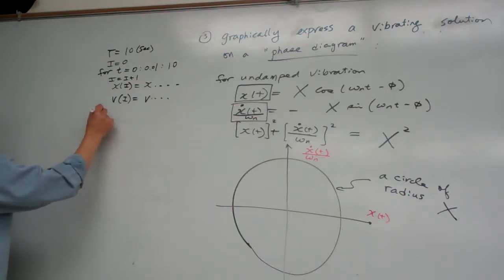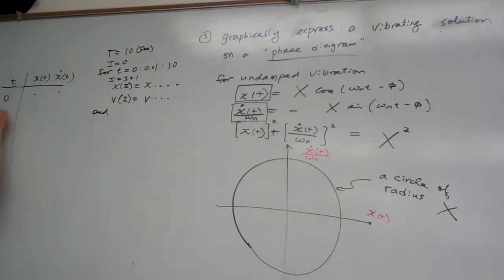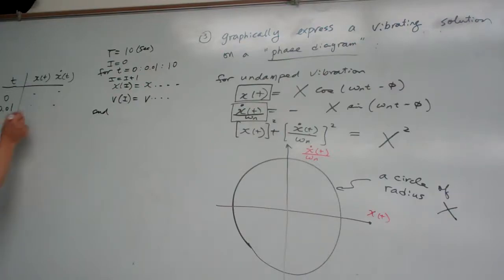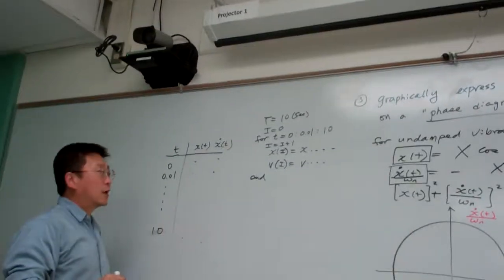So now this is it. So in this way, in the whole cycles, you have the information is like this. When t equal to zero, you have x, t and x, t dot. And for the first, t equal to zero, you have the value, and equal to zero one you have the value, and t equal to 10, and you have so many values.